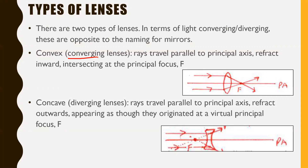Convex lenses, or converging lenses, have rays that travel perpendicular to — parallel to — the principal axis and refract inward. Refract is basically the lens equivalent of reflect; it just bends the light, and it intersects with the principal focus F. In the diagram, a convex lens causes the light rays to bend towards the focal point as long as they were parallel to the principal axis.